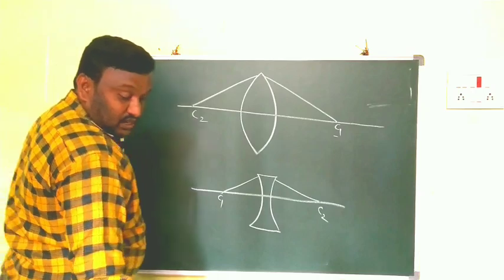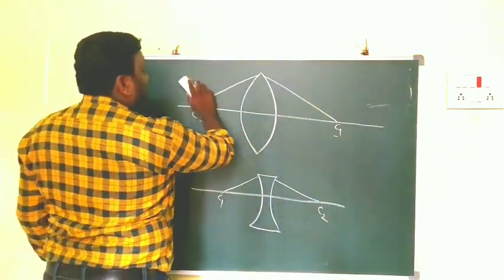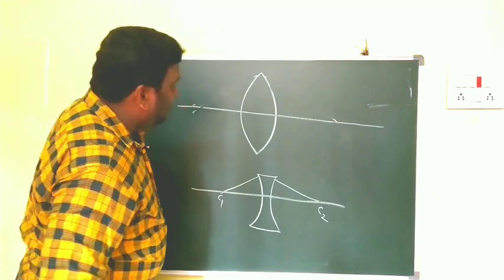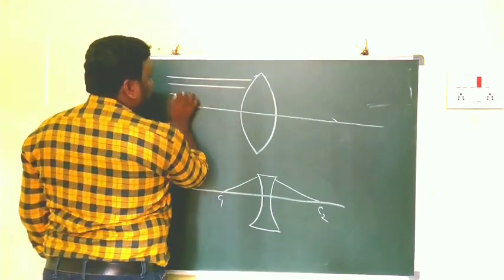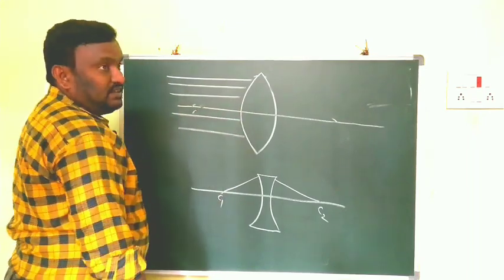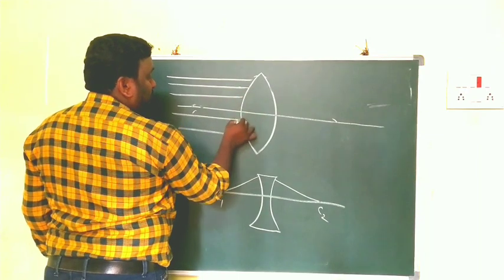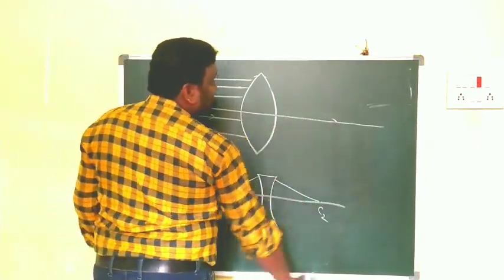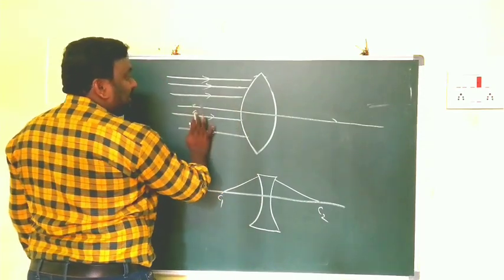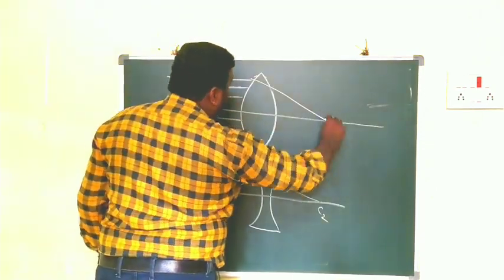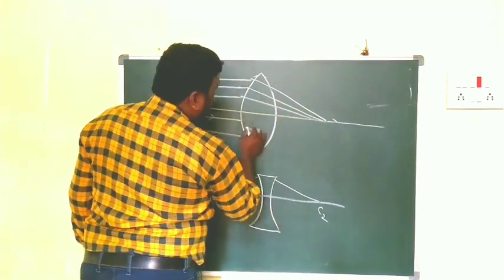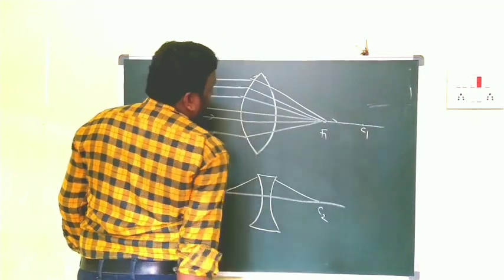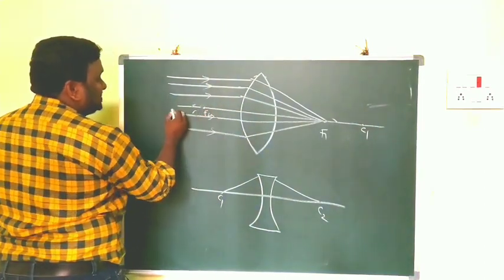Now I want to show the focal length. The light is coming from a long distance — infinite distance — so it is a parallel beam. This is the principal axis. The light parallel to the principal axis, after refraction, meets at one point. That point is called the focus — F1. On the other side is F2, and further out are C1 and C2. The distance from the optic center to the focal point is what we call focal length.